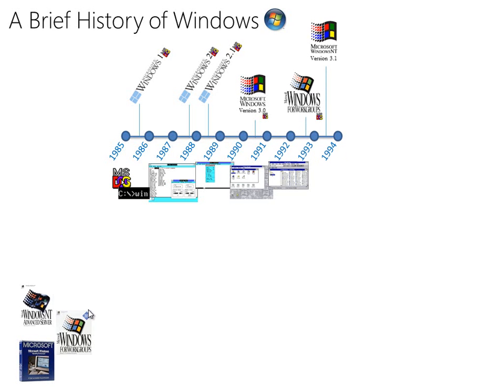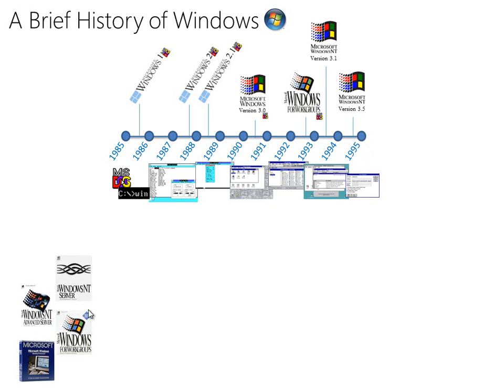Windows NT 3.1, which is not based on DOS but on the NT kernel, shared that same Program Manager interface. It added advanced user management and domain creation. Then we saw Windows NT 3.5 and NT 3.5.1. In 1995, the big change was Windows 95.